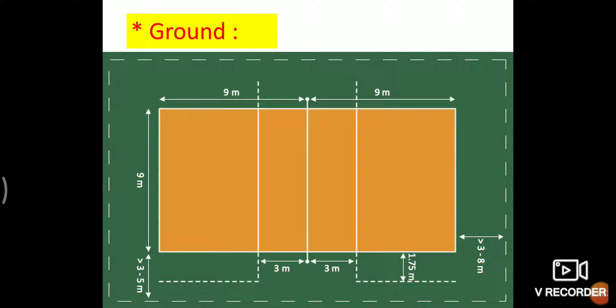All lines of ground are 5 centimeters wide and are part of the ground. In the center of court, the 5 centimeter wide line dividing the playing court into two equal parts is called center line.